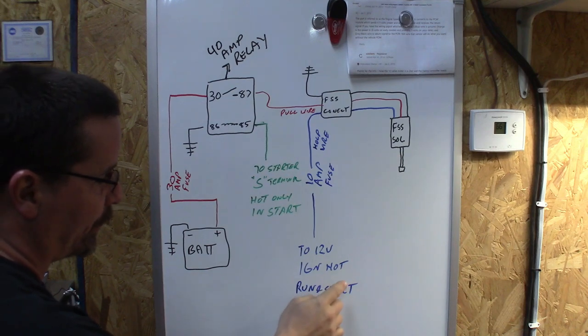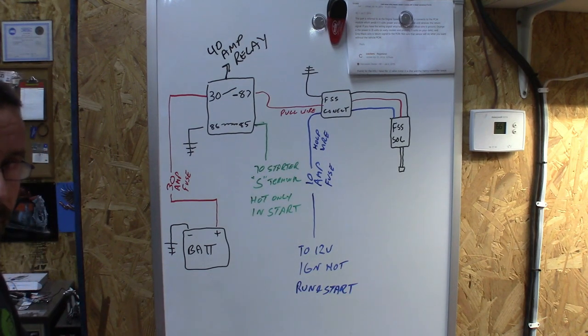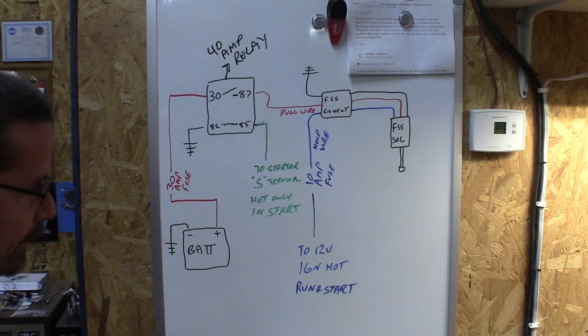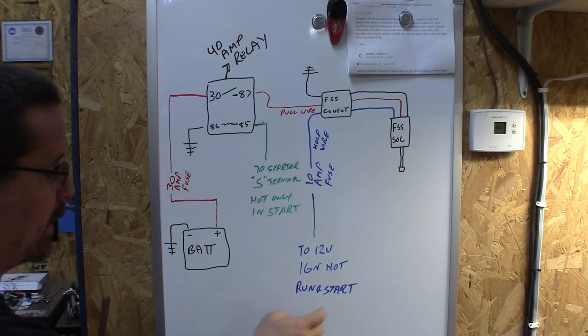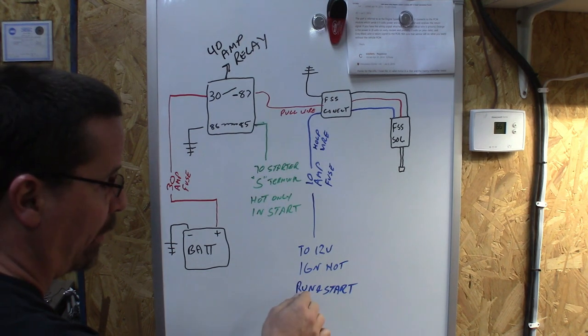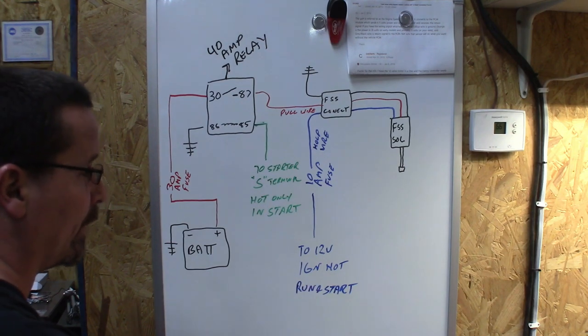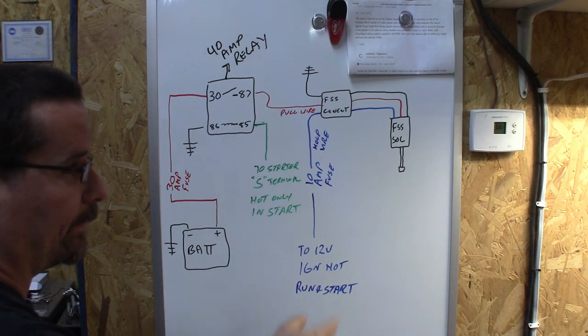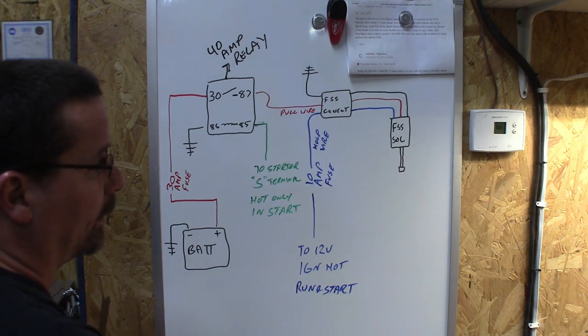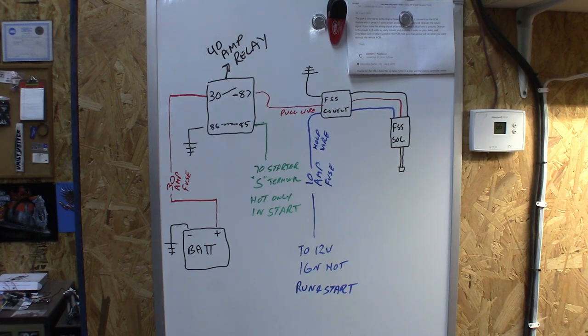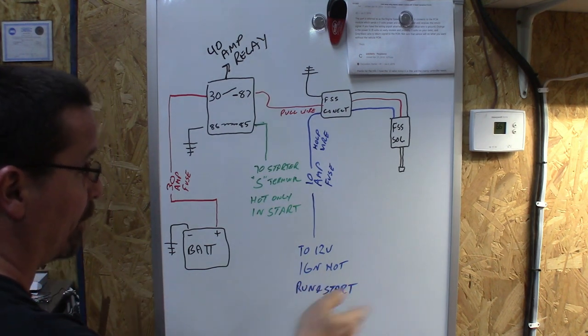Now what I said earlier, make sure that that wire is hot in both run and start. That's when the ignition key is in the run position and when it's in the cranking position. Some of your older cars did not have power to the ignition side of the fuse box while cranking. So you may have to get a little creative there if you're dealing with something older to get around that. In case of our square body the wire we are using does have power run in start.